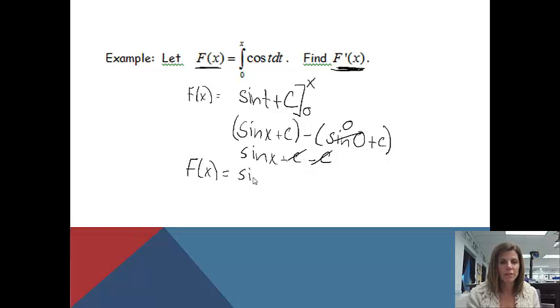So my function, my capital F of x, is equal to the sine of x. So I found what capital F of x is. What they asked me to do was to find F prime. So to find F prime, now what I would need to do is actually take the derivative of sine x, which is cosine x.